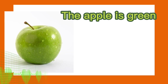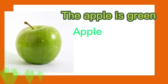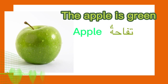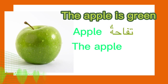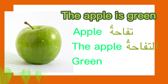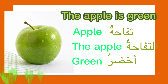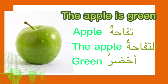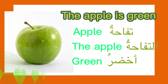How to say 'the apple is green'? Apple is تفاحة. The apple is التفاحة, and green is أخضر. However, in Arabic, we treat the colors just like nouns, meaning that if the noun is feminine, we will treat it as feminine.